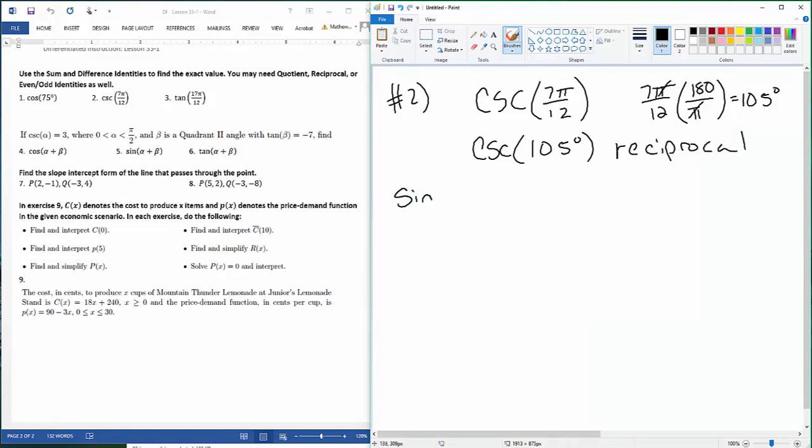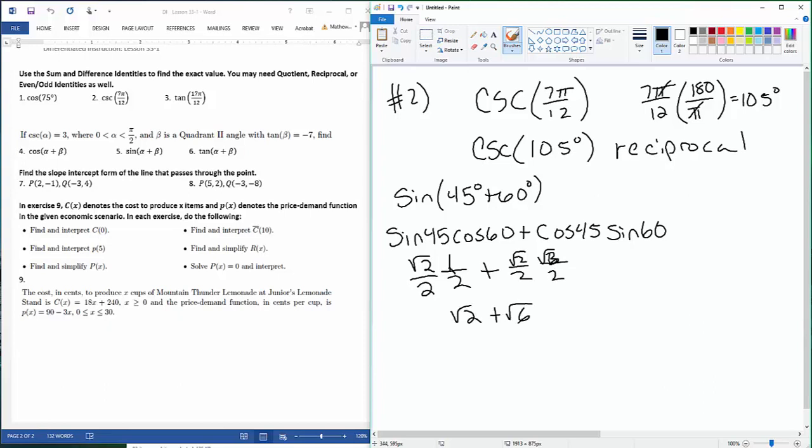So if I use sine, I could say this is 45 degrees plus 60 degrees, and then that's going to be sine 45 cosine 60 plus cosine 45 sine 60. Now the sine of 45 is √2/2, cosine of 60 is 1/2, plus cosine of 45 is √2/2, sine of 60 is √3/2. And so this simplifies into (√2 + √6)/4.